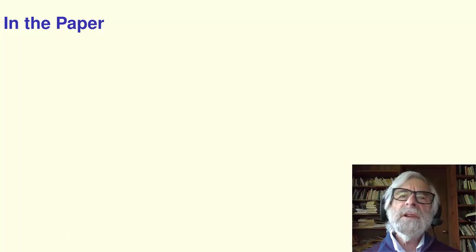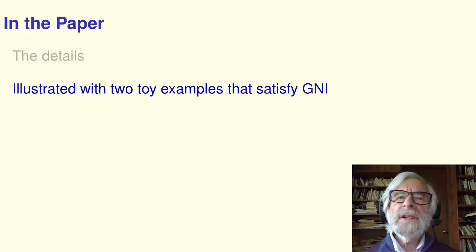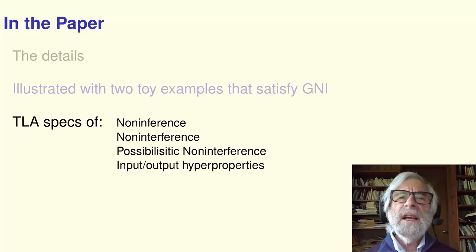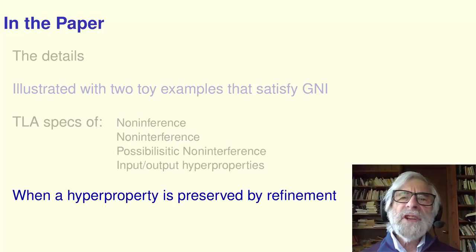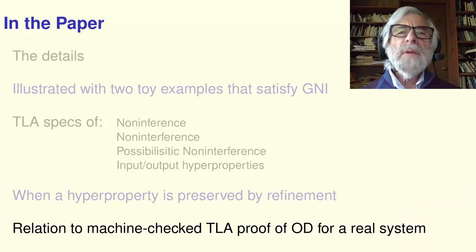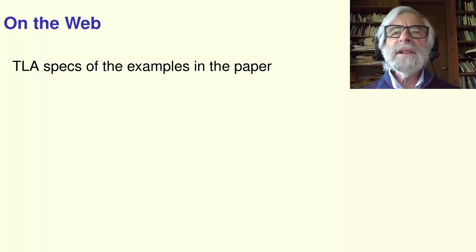What's in the paper? I've been doing a lot of hand-waving. The paper contains the details. They're explained with two toy systems that satisfy GNI. There are TLA specifications of these other security hyperproperties. There is a characterization of when a hyperproperty is preserved under a refinement. The paper contains toy examples, but TLA is not a toy. Others have written a machine-checked TLA proof of observational determinism for a real-time message passing system that was later commercialized. The paper explores the relation of that work to ours. On the web, you can find model-check TLA specifications of the examples in the paper, and all about TLA so you can try it yourself. Thank you.